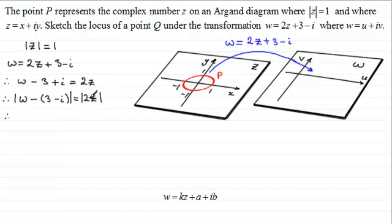Now when it comes to the modulus of 2z, what we can do is split that to be the modulus of 2 multiplied by the modulus of z. Now the modulus of z we know is 1 and the modulus of 2 is just going to be 2, so 2 times 1 is 2. So what we've got here now is the modulus then of w minus, and then in brackets, 3 minus i equals 2.